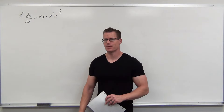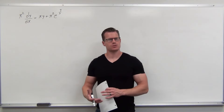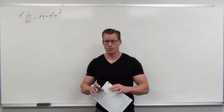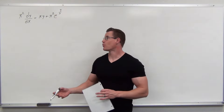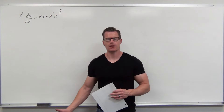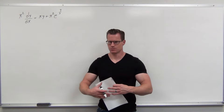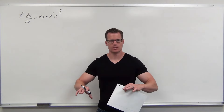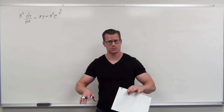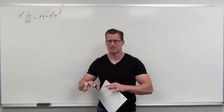The next example has an e in it — e raised to the power y/x. That's practically begging you to use the homogeneous substitution v = y/x, because that exponent becomes v directly. Let's divide both sides by x² to try to get this into the proper form: dy/dx equals a whole bunch of stuff where every instance of y is divided by x.